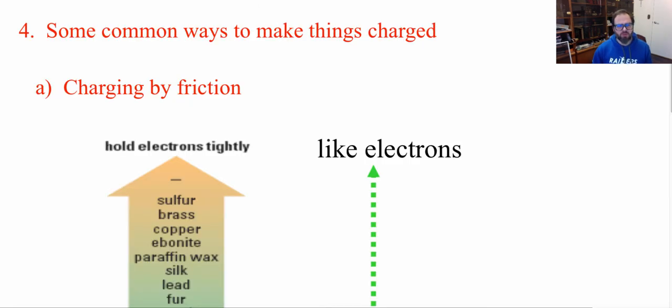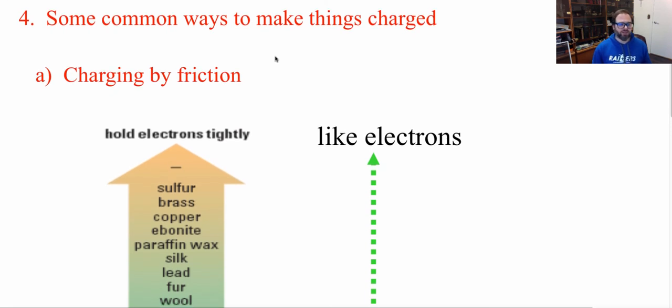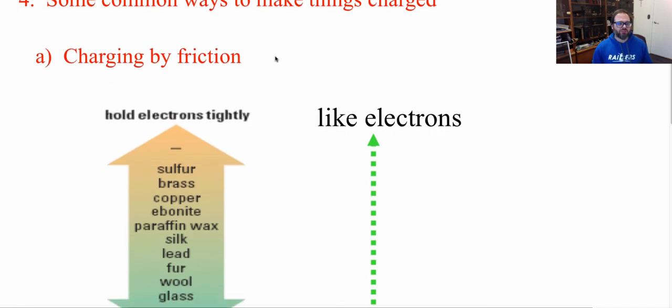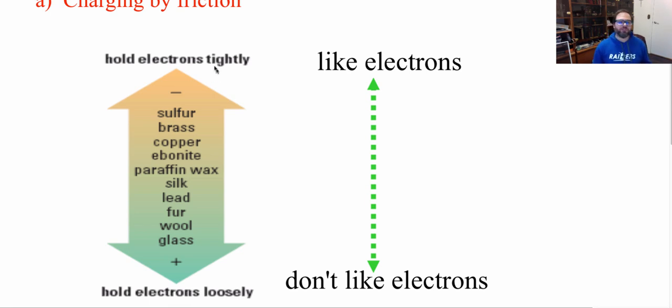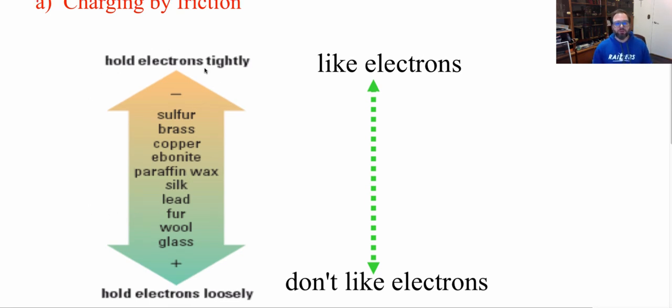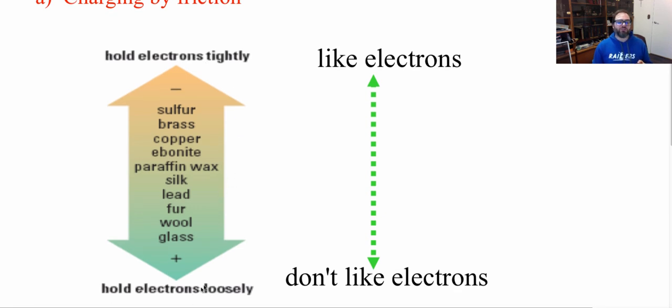Now we're going to look at some common ways to give things a charge. The first way we're going to look at is through friction. We have all used friction to give charges before, especially when we were kids, to shock people. But have you ever wondered which one's getting the positive charge? Is it you or the carpet? And which one's getting the negative charge? Well, a way to figure that out is through the Triboelectric Series, which is a chart like this here. The top of the Triboelectric Series charts, we always have objects that like electrons, where they hold electrons tightly. And the bottom hold electrons loosely, and they don't like electrons.